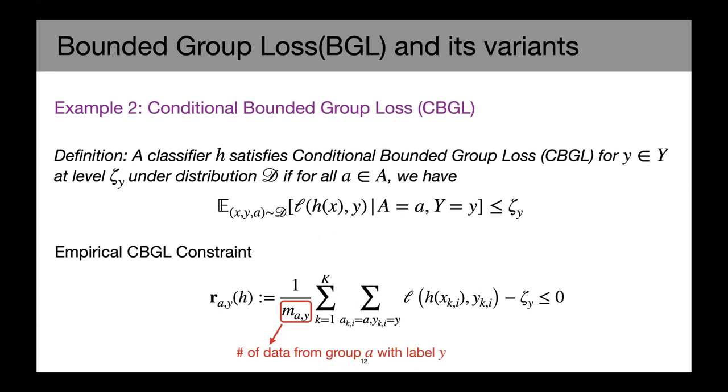We also extend our definition to be a more specific definition known as conditional bounded group loss. So similarly, we are trying to post some constant on some per group loss. However, in this scenario, we are not restricting the group to be just the protected attribute, but we take the pair of the protected attribute A and the true label Y as the new notion of the group. Instead of enforcing a single global zeta over all the constraints, now we are setting this zeta_Y, which is only the same across all the true label rather than having a single global one, due to the prediction difficulty could be different for different true labels.